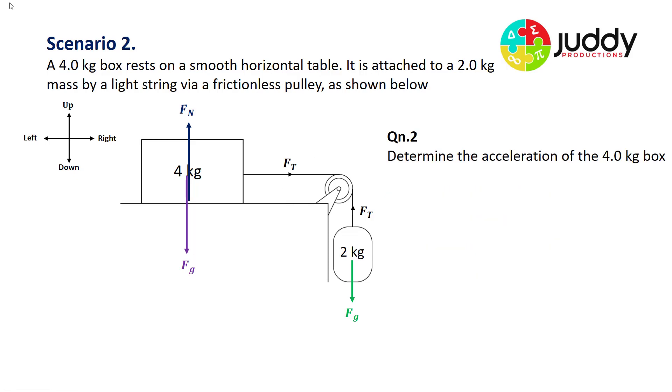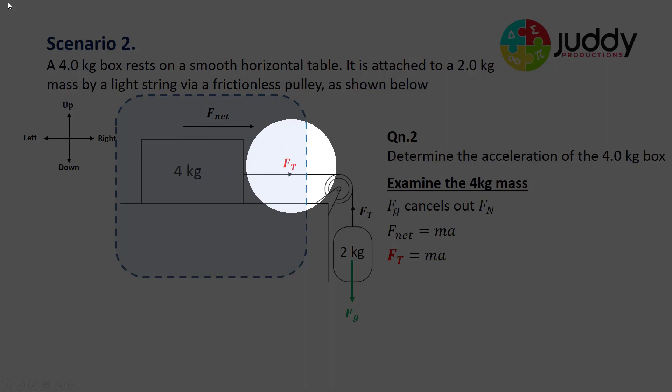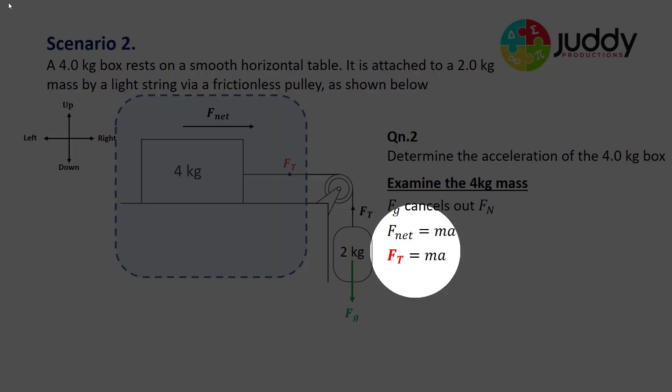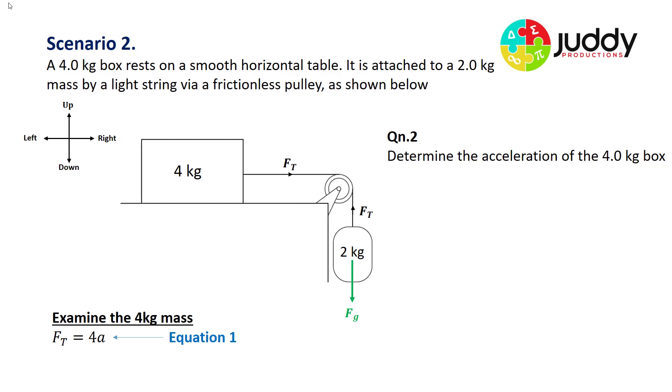Question two: determine the acceleration of the four kilogram box. Let's examine the four kilogram mass only. The force due to gravity cancels out with the normal reaction force. The box undergoes a net force to the right generated by the tension in the string. So the tension force on the box equals its mass times acceleration. The mass of the box is four kilograms, so Ft equals 4a. That's our first equation.